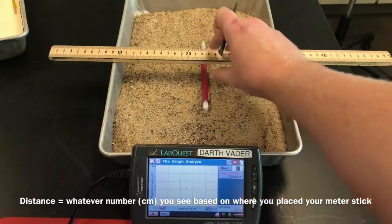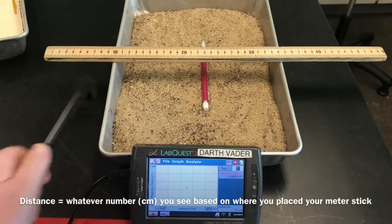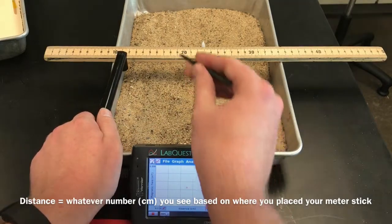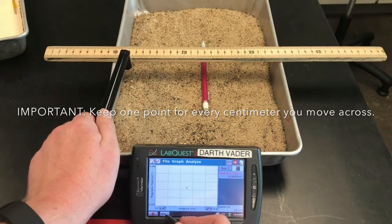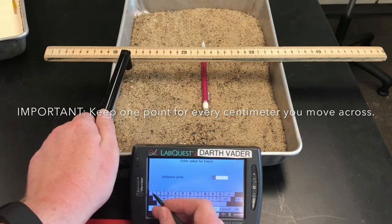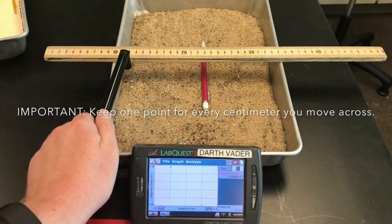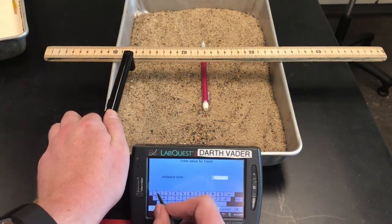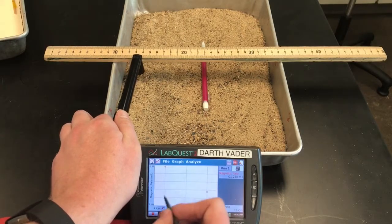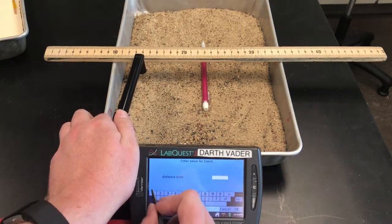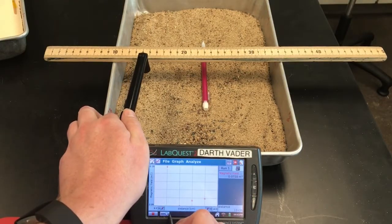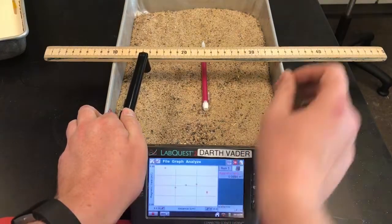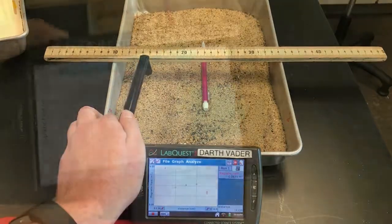If you started at zero over here, that's obviously going to be different, but I'm at 10 centimeters. I'll move it over here to 11. And we're going to keep one point for every centimeter as we go all the way across. So it looks like I'm going to have about 24 or 25 points and that should be the same for you. So you're going to do this all the way until you get to the other side. So it looks like I'll probably be ending over here at 34.